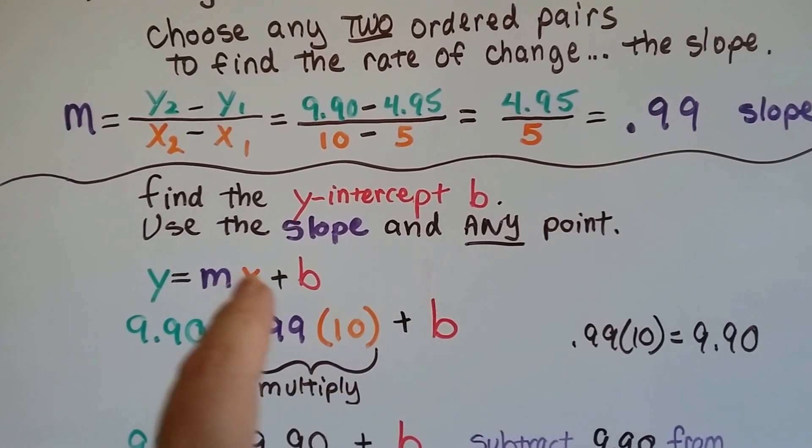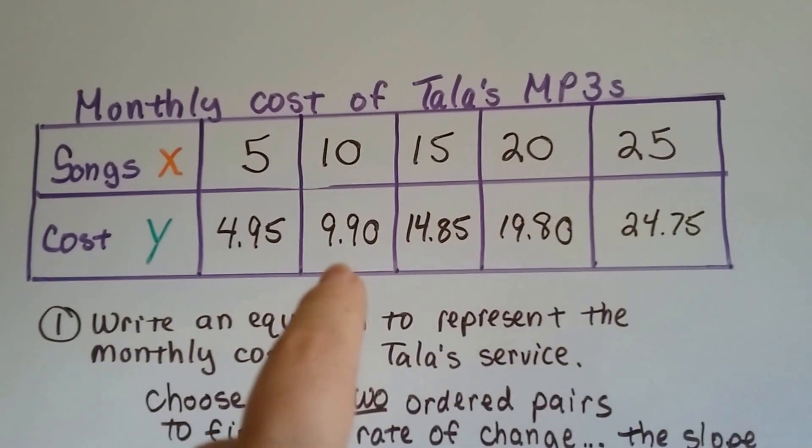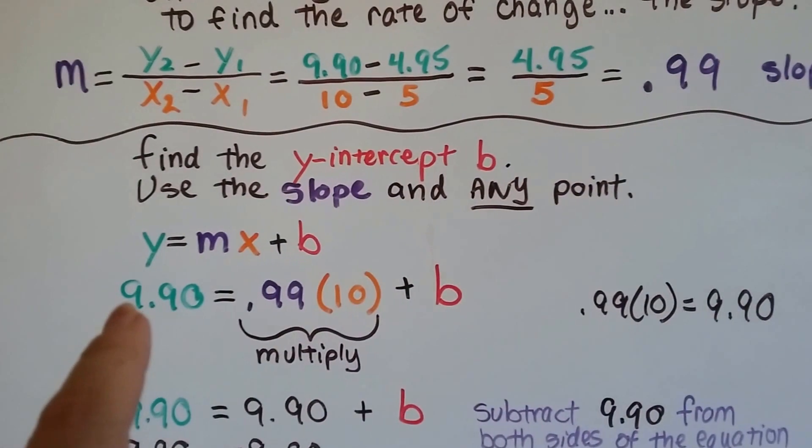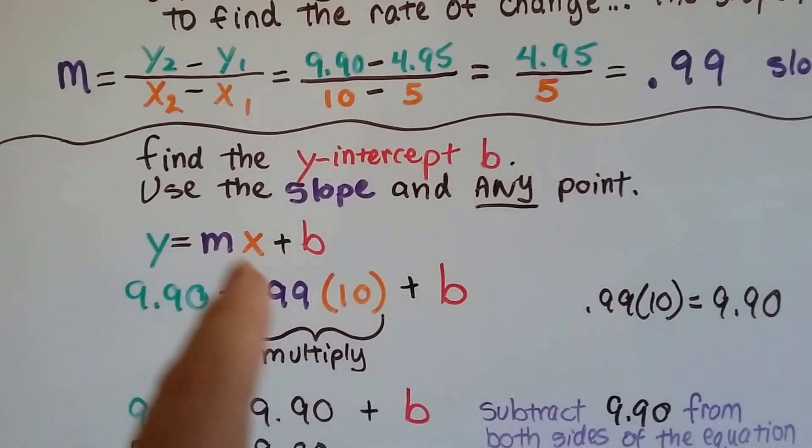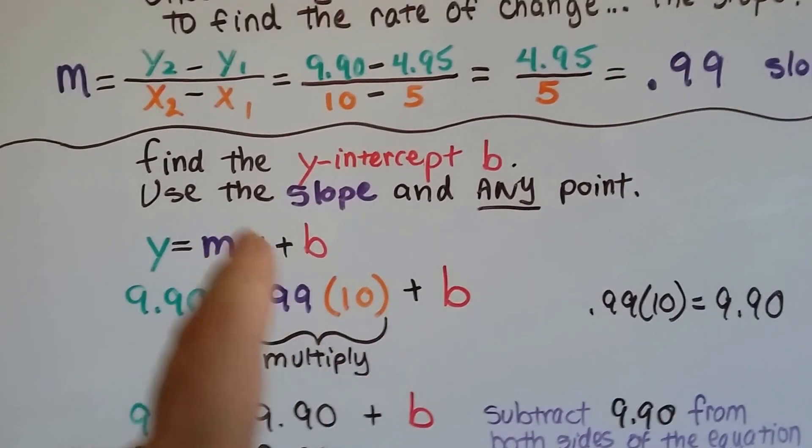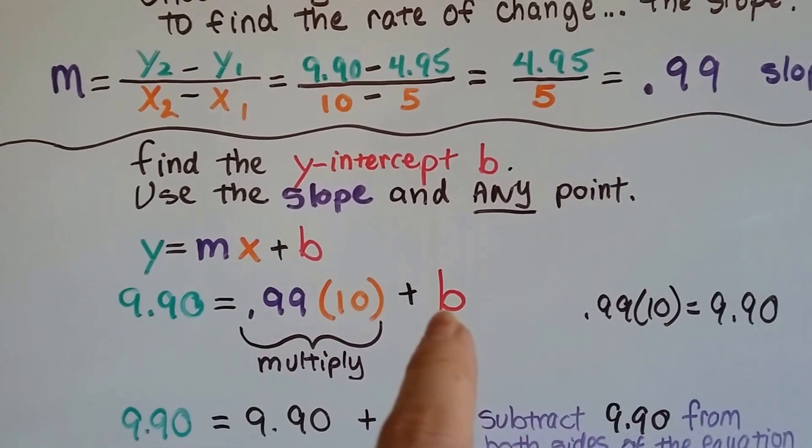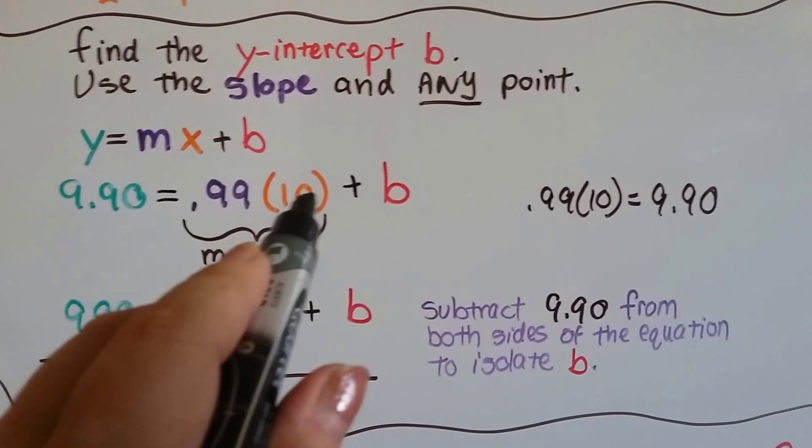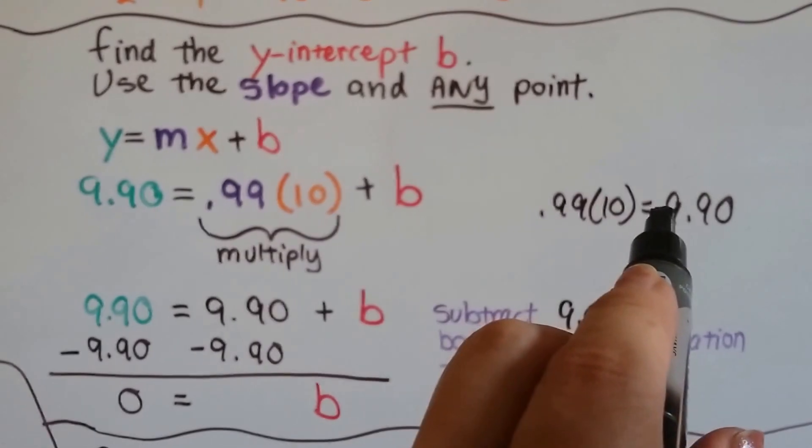And our 10 is the x value. 9.90 is the y, and 10 is the x. So I plugged in the 9.90 for the y. We've got our .99 for our slope. And now we've got 10 for our x. And we put the b here, because that's what we're trying to solve for. We multiply .99 times 10, we get 9.90.